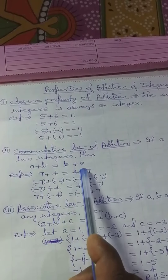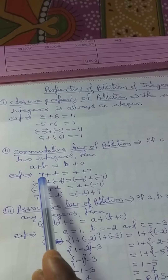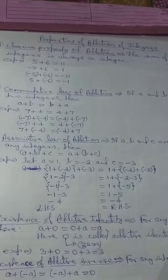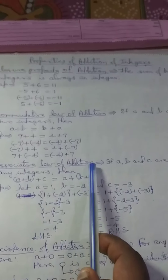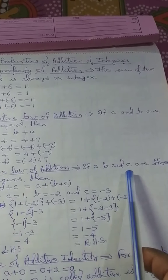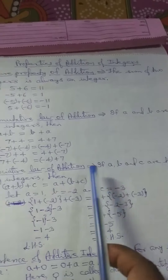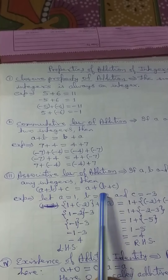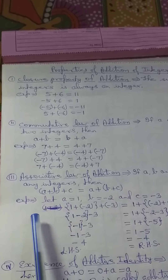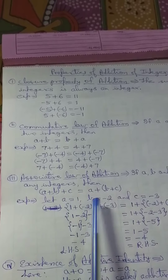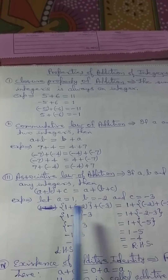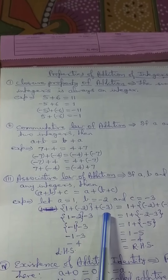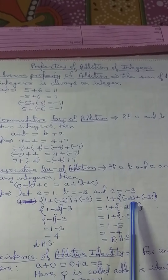This is the commutative law of addition: A + B = B + A. Here, in the example, A = 7 and B = 4. Now, associative law of addition. If A, B, and C are three integers, then (A + B) + C = A + (B + C). Let A = 1, B = −2, and C = −3. So: (1 + (−2)) + (−3) = 1 + ((−2) + (−3)).